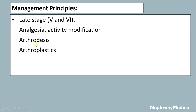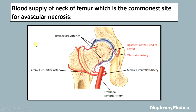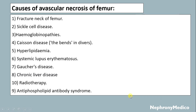The blood supply of the neck of the femur — the most common site for avascular necrosis — is provided by the medial circumflex artery, retinacular arteries, lateral circumflex artery, and profunda femoris artery.